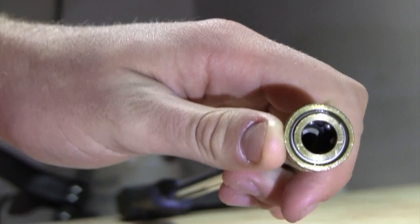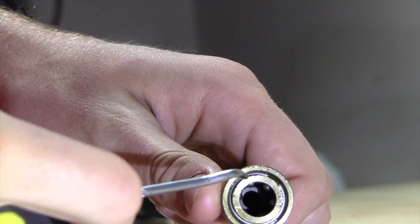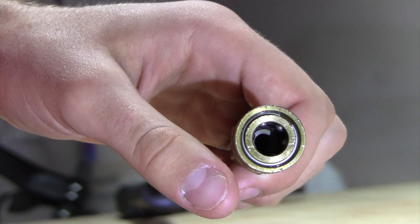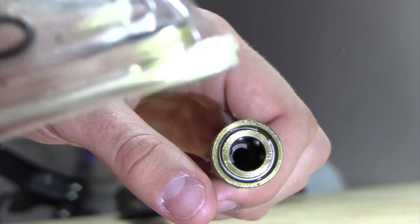So now that we know what the problem is, all we have to do is take out what remains of that rubber seal in there and then replace it with a new one, which I have right here.